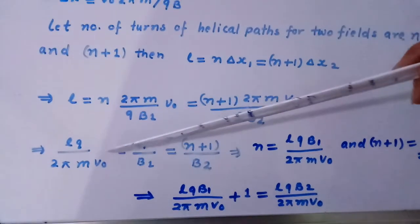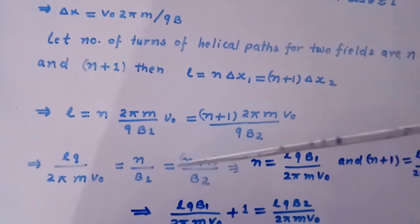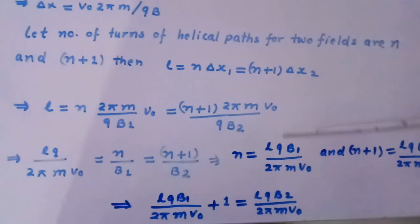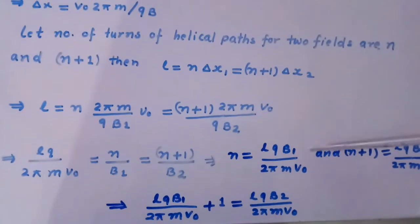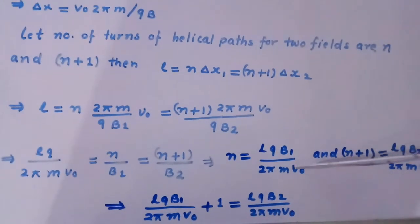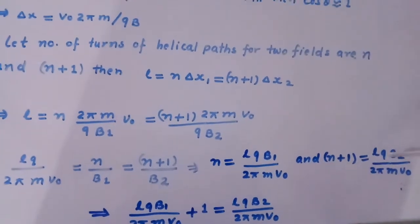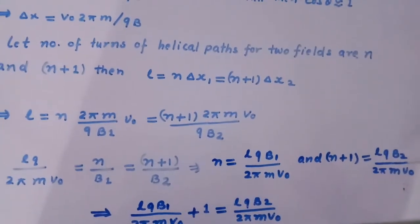Or we find LQ divided by 2 pi M V0 which is equal to N upon B1 equal to N plus 1 upon B2, or N equal to LQB1 divided by 2 pi M V0 and N plus 1 equal to LQB2 divided by 2 pi M V0.